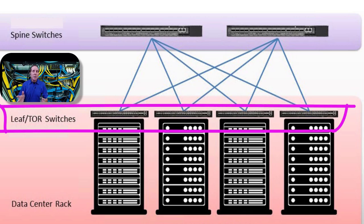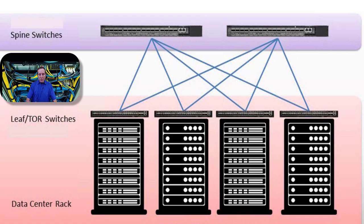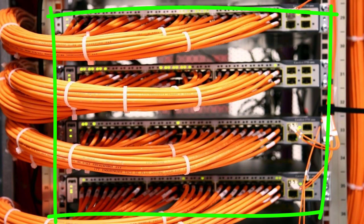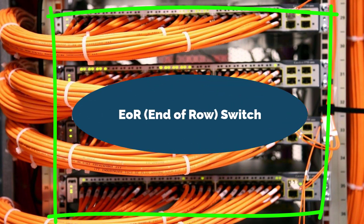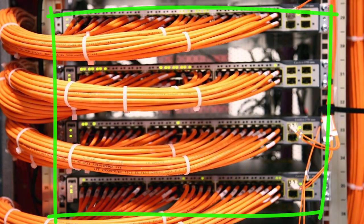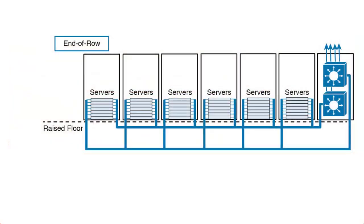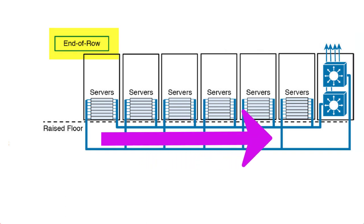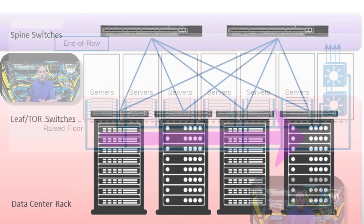Now some data centers take racks of servers, racks of storage, and then at the end of the row they put all the switches at the end of the row. Those are called EOR switches — end of row switches. Cabling has to be longer because you've got to run your cabling down to the end of the row to where all your switches are. There are advantages to having end of row switches versus TOR switches.